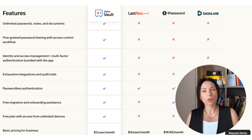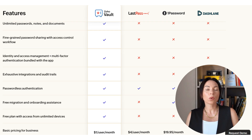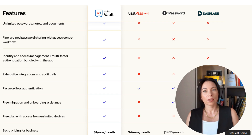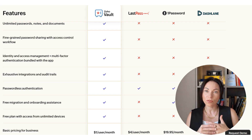When it comes to pricing for businesses, Zoho Vault is just $1 per user per month. Compare that to $4 for LastPass, $19.95 for 1Password, and $20 for Dashlane. Zoho Vault offers the most features at the lowest price.